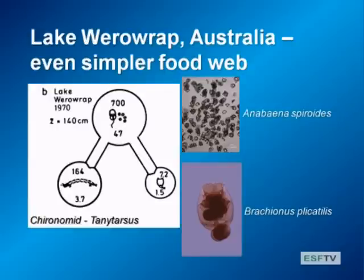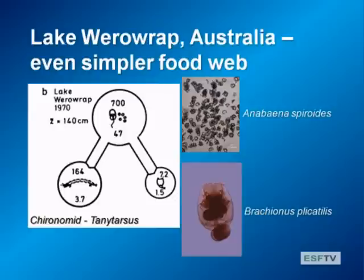Another simple food web that's been studied a lot is in Australia. Lake Werowap is very, very saline and it's dominated by just a few types of algae and a few types of animals including the chironomid Tanytarsus and the rotifer Brachionus plicatilis—a really nice simple food web that theoretical ecologists can study to look at basic ecological patterns.